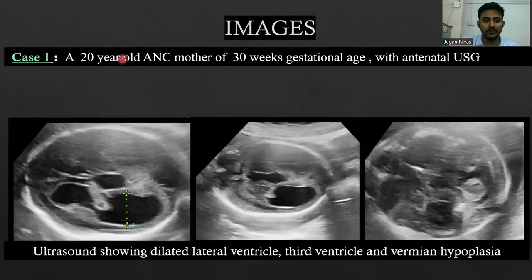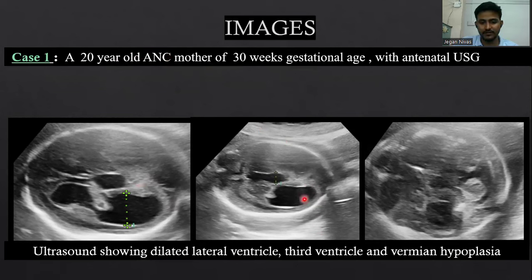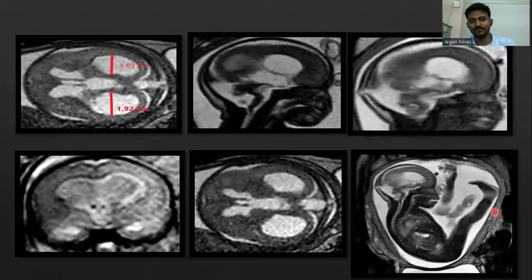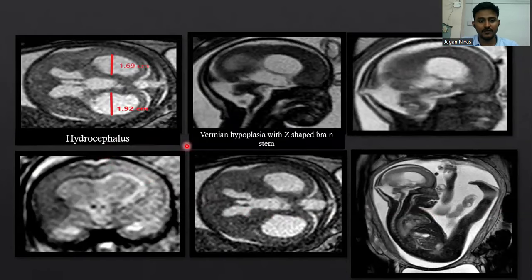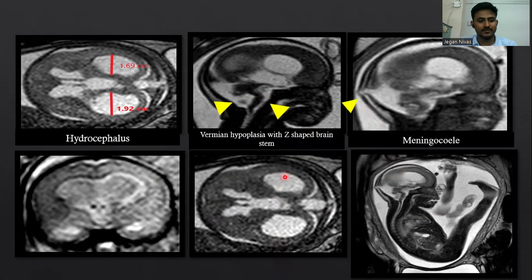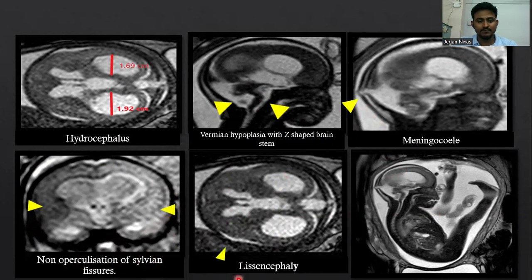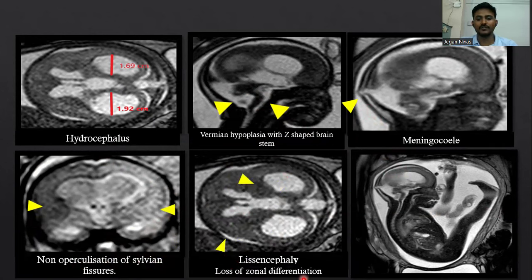Case one: a 20-year-old antenatal mother with gestational USG. On ultrasound, we can see dilated ventricles with vermian hypoplasia. Additionally, we performed MRI which revealed findings of hydrocephalus, vermian hypoplasia with Z-shaped brain stem, small occipital meningocele, non-operculation of sylvian fissures, microcephaly with less than expected head circumference, and loss of zonal differentiation.